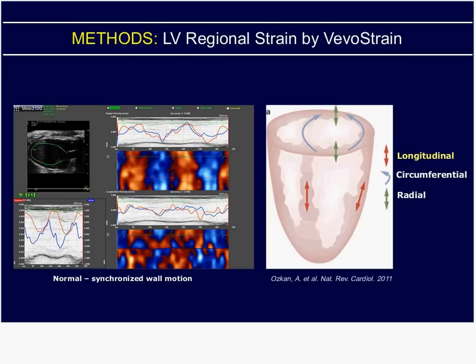We also made use of the VivoStrain package on the VIVO 2100. At left, you've got normal synchronized wall motion from a standard mouse. At right, we're showing the different strain measurements that can be made: longitudinal strain in blue, circumferential strain, and radial strain in green.